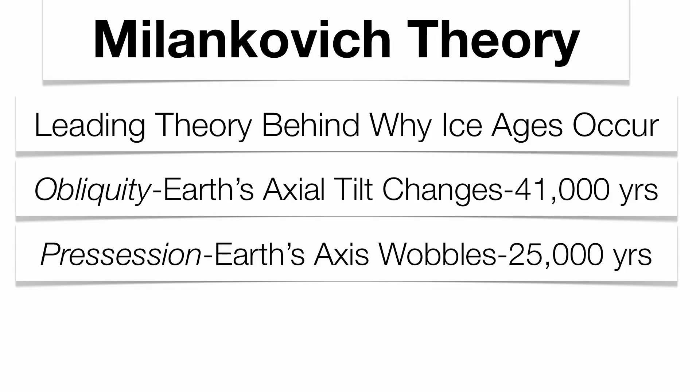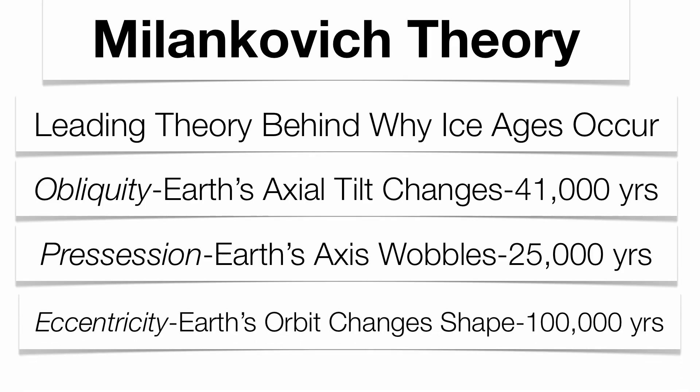Precession means that the axis has a wobble — every once in a while it will change from pointing to Polaris to pointing to a star called Vega, back to Polaris, back to Vega, on a every 25,000-year cycle. This again changes the angle of insolation. And finally, eccentricity basically changes the shape of the Earth's orbit from being somewhat circular to being elongated, ultimately changing the amount of insolation from the Sun as well. So this three-part theory gives us an idea about why our ice ages actually occur.